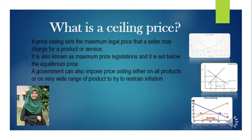The advantages of a price ceiling, also called maximum price, are: first, consumers can purchase goods and services at a lower price; and second, it helps restrain inflation. The disadvantages include the emergence of a black market, where goods are sold at high prices. Additionally, producers produce lower quantities and may tend to receive illegal payments from consumers.